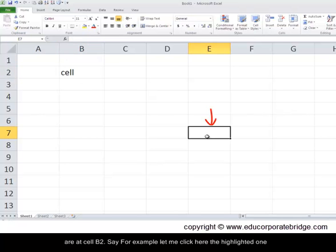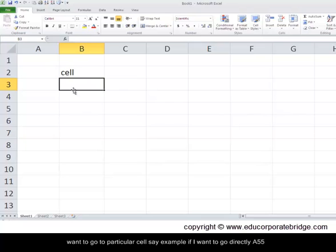Say for example let me click here. The highlighted one is E and 7. The cell number would be E7 which is visible here. Let's say if I want to go to a particular cell, say for example if I want to go directly to cell A55. There's a shortcut by which you can do it.